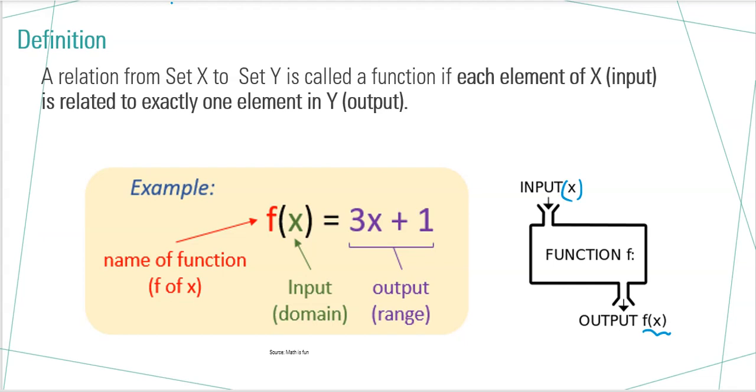Here f stands for the name of the function. x values are nothing but the input. In mathematical terms, we call it domain. Then, the value like 3x plus 1 is called output. In mathematical terms, it is known as range.